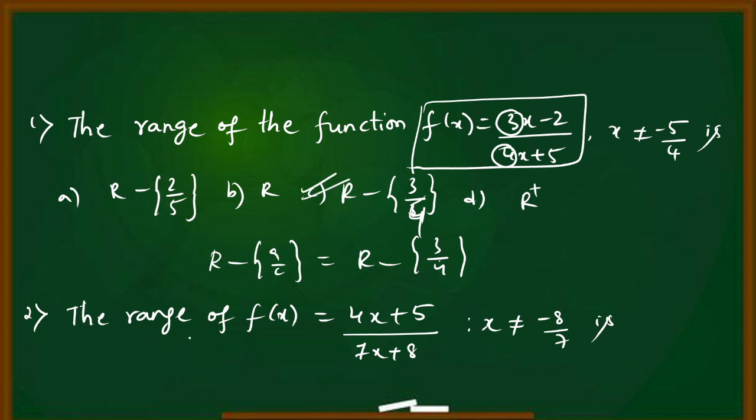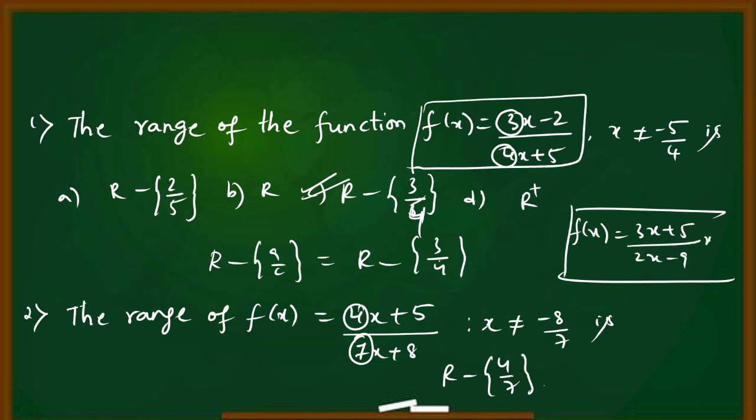Next, the range of f(x) is R minus 4/7. Third question: find the range where f(x) = (3x+5)/(2x-9), where x should not equal 9/2. You find out the answer and write it in the comment section.